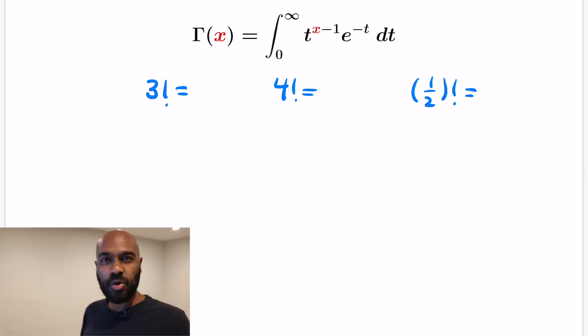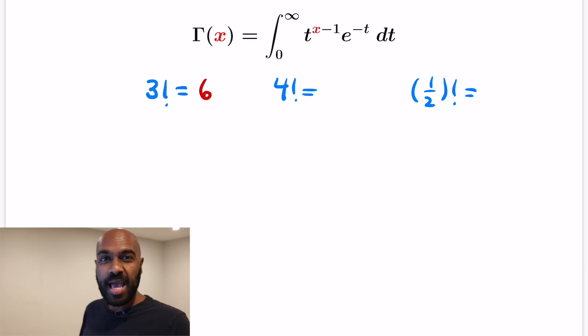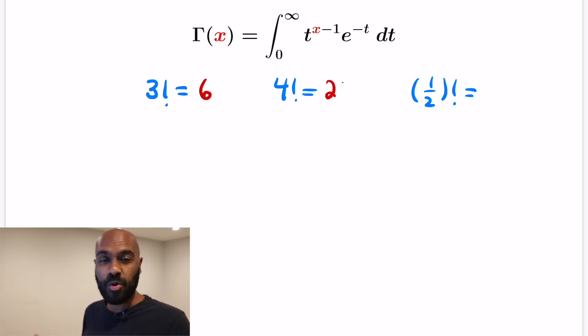So 3 factorial is 3 times 2 times 1, which is 6, and 4 factorial is 4 times that, which is 24.